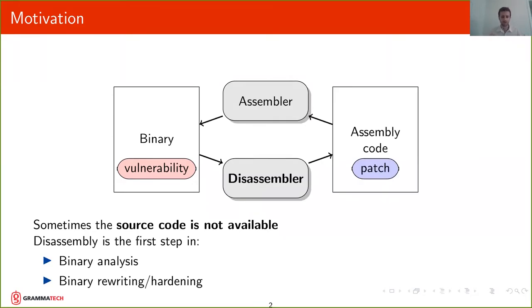One of the few options that you have is you can try to disassemble the binary, devise a patch to fix that vulnerability in the assembly code, and reassemble and generate a new binary. So disassembly is the first step in several technologies such as binary analysis, binary rewriting, and binary hardening.